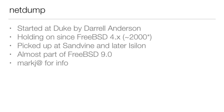The oldest dump extension is net dump. It was started at Duke by a guy named Daryl Anderson. Drew Gallatin corrected me at BSDCan — I used to say 2004, but it was actually around 2000. So this is 17-year-old code that's been floating around, still working at places like Isilon, having traveled through Sandvine. It was almost part of FreeBSD 9.0 and kind of has this interesting odyssey where it's always almost there but never quite makes it into the kernel. Mark Johnston is the current person working on it.